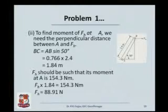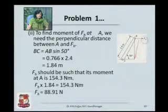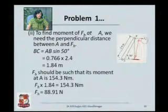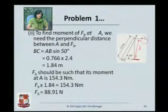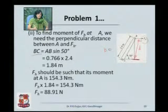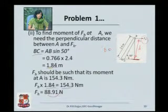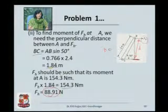Part 2: when the force is applied in the horizontal direction, we again need the perpendicular distance from A. BC equals AB sin 50. AB is 2.4 and sin 50 is 0.766, giving the distance BC. The moment must still be 154.3 N·m. Since the moment and distance are known, we can find the force — the horizontal force comes out to be 88.91 N to create the same moment.